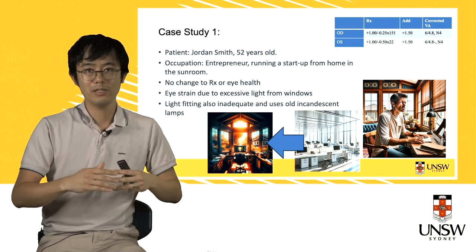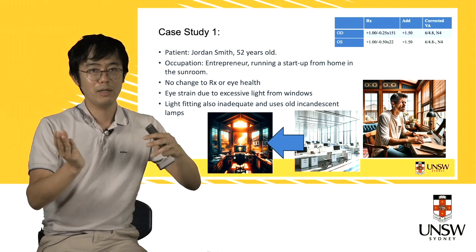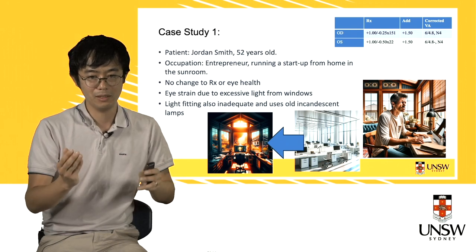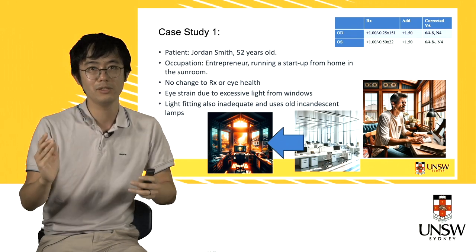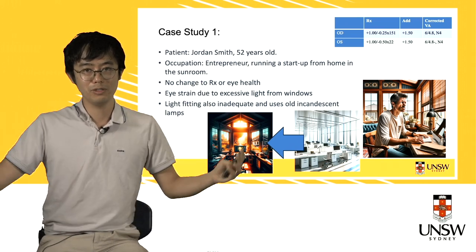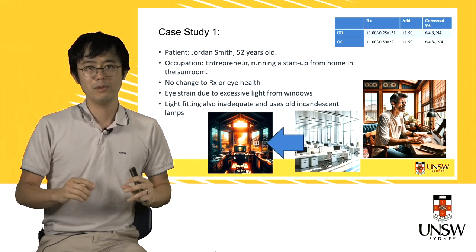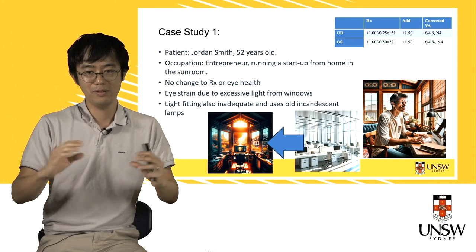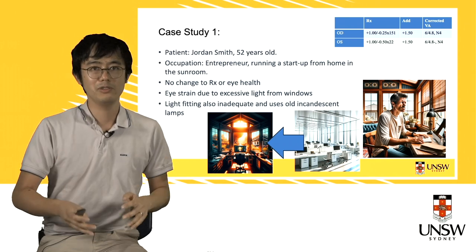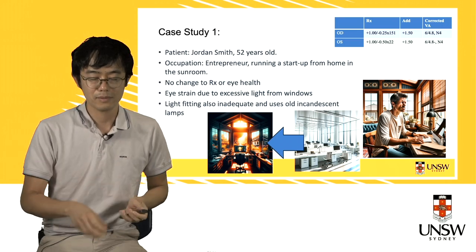In his previous work he was in a really well-lit, well-set-up environment. But because he's running his business from home, he had to make do with what he had. What he had in his California bungalow was an old sun room surrounded by windows everywhere — lots of afternoon and morning sun causing glare and excessive light. At night time he didn't get enough light because the light fittings were about a hundred years old. As an optometrist you sometimes have to think about the environment your patient is working in.